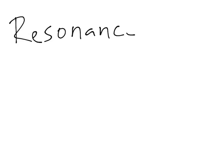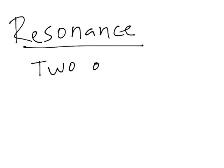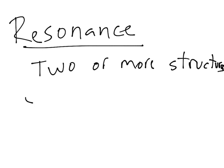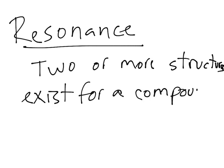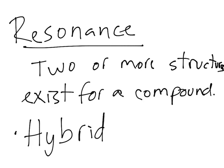In this video, I'll be explaining the concept of resonance and bond order. Resonance is what occurs when two or more possible Lewis structures exist for a species or molecule. That results in a hybrid structure. The best way to explain this is with an example.